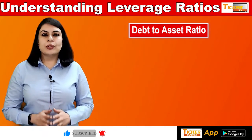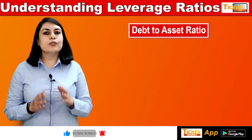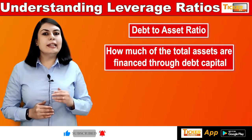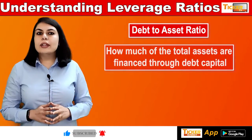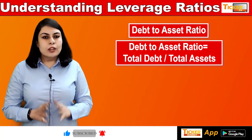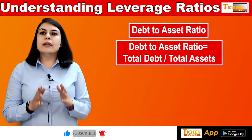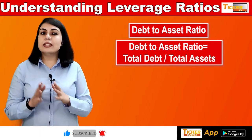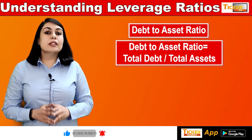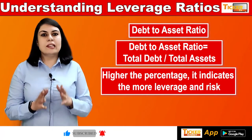Fifth is the debt-to-asset ratio, which helps us understand the asset financing pattern of the company — specifically, how much of the total assets are financed through debt capital. The formula is total debt divided by total assets. For example, if 45% of the assets are financed through debt capital, then the remaining 55% is financed by the owners. The higher the percentage, the more leverage and risk it indicates.